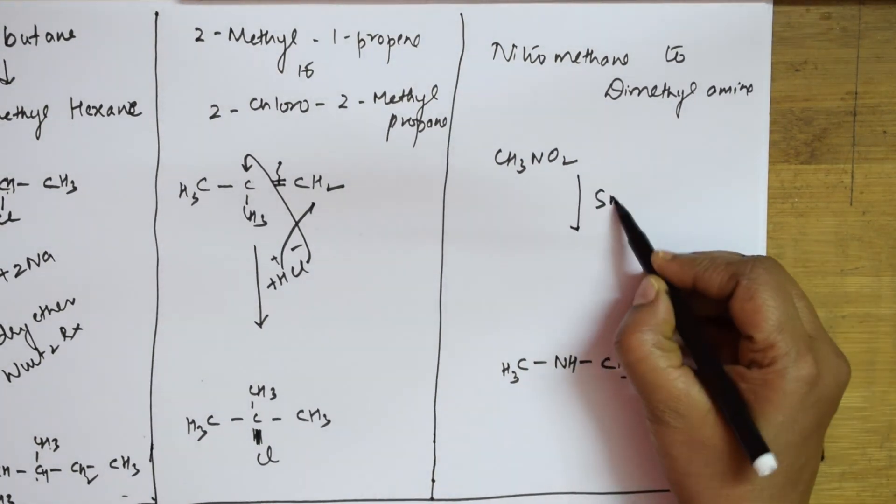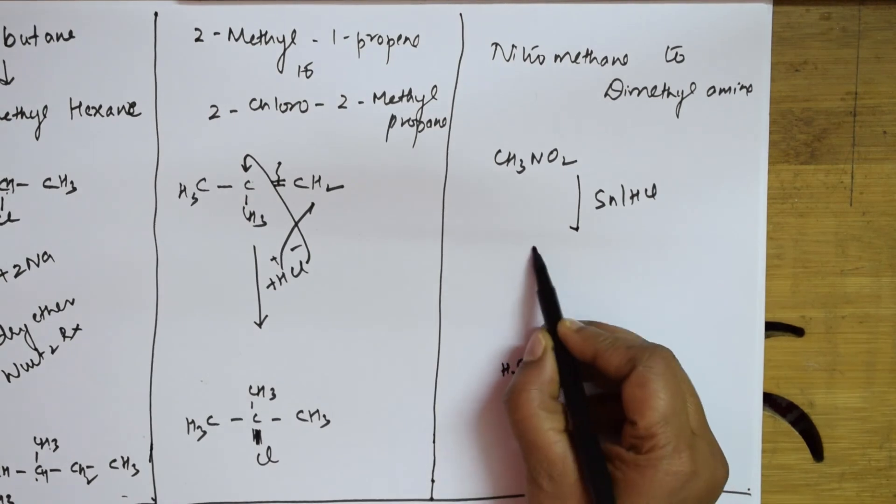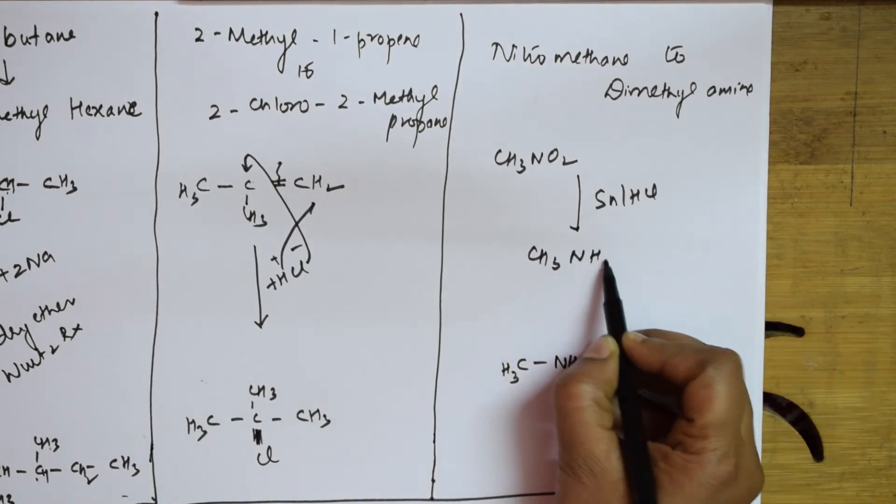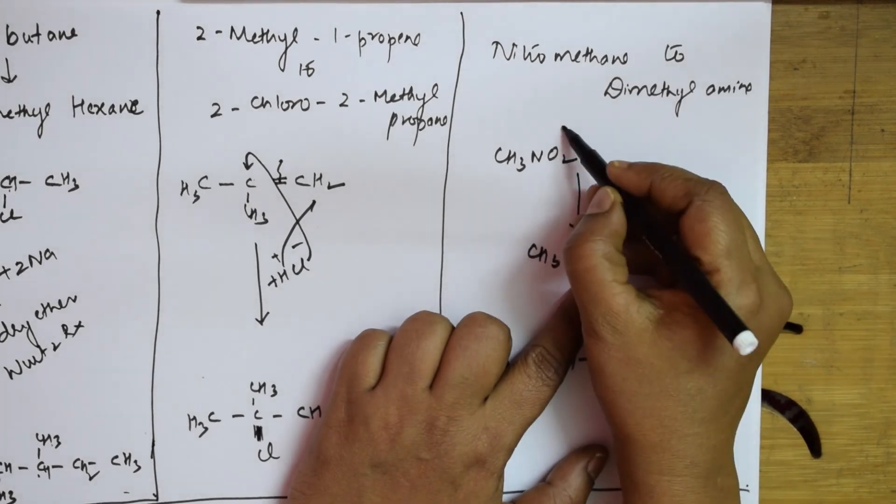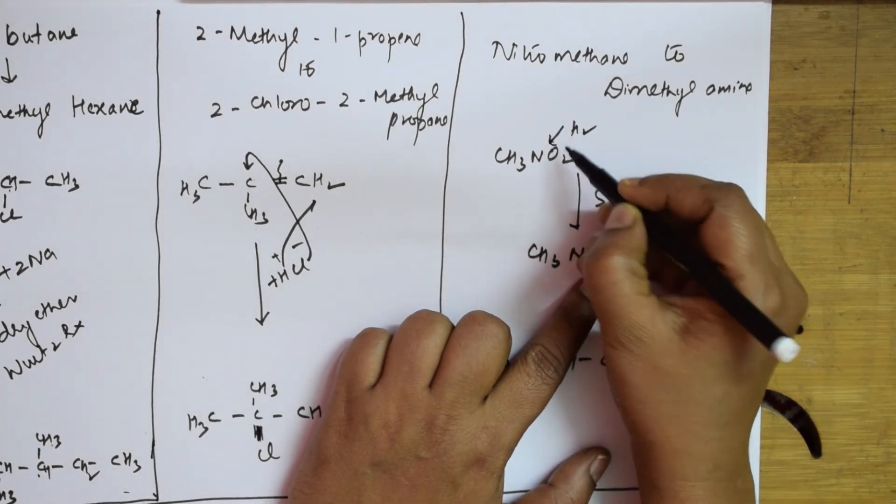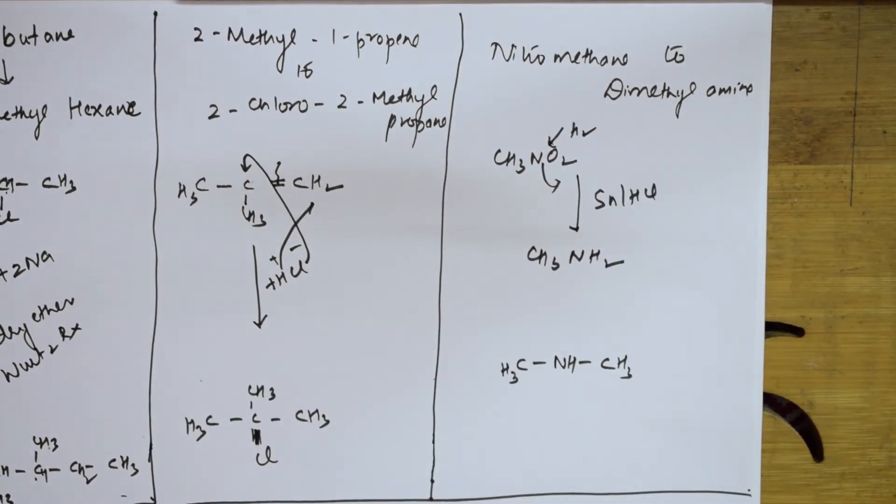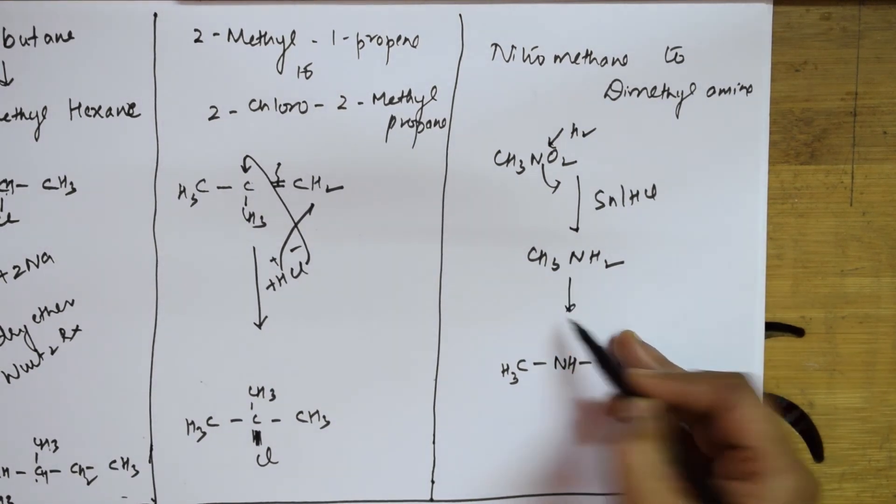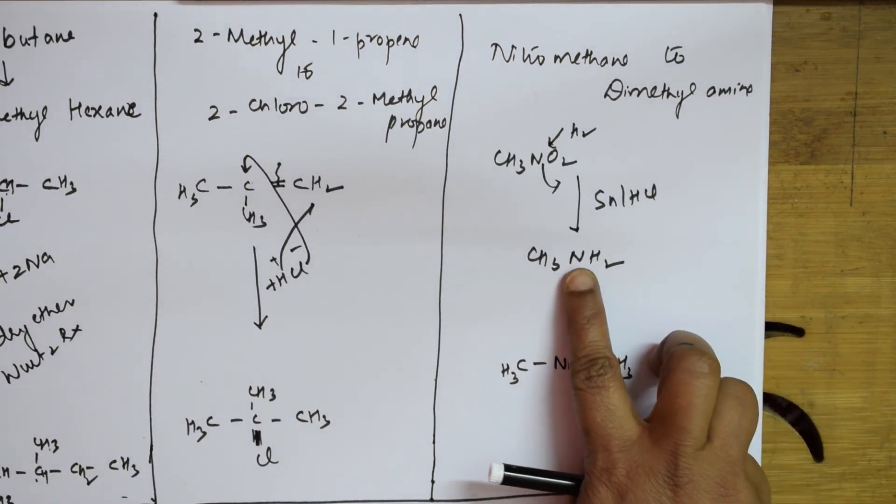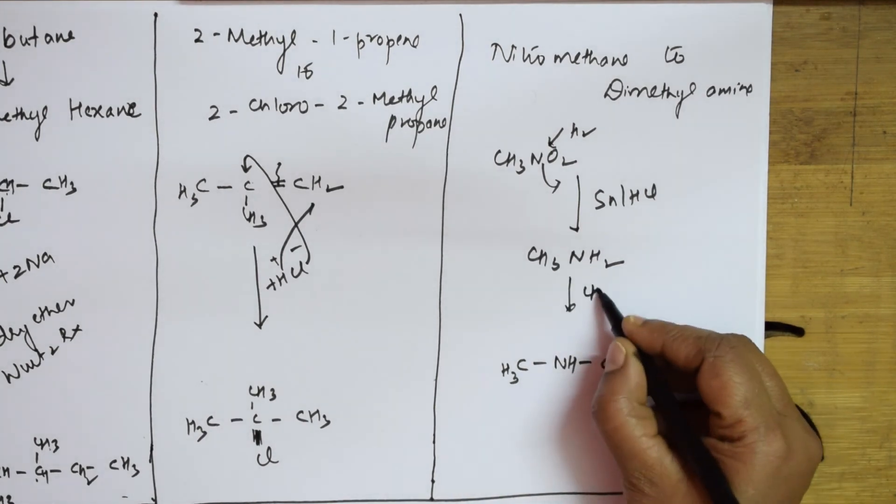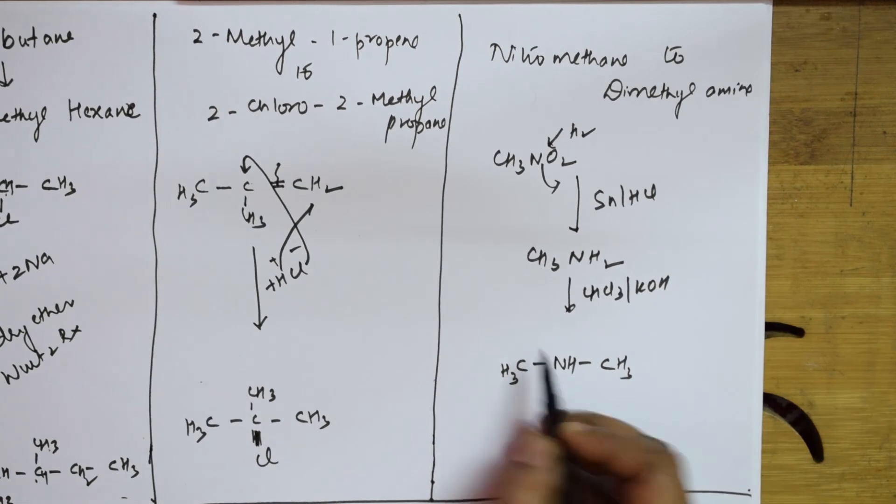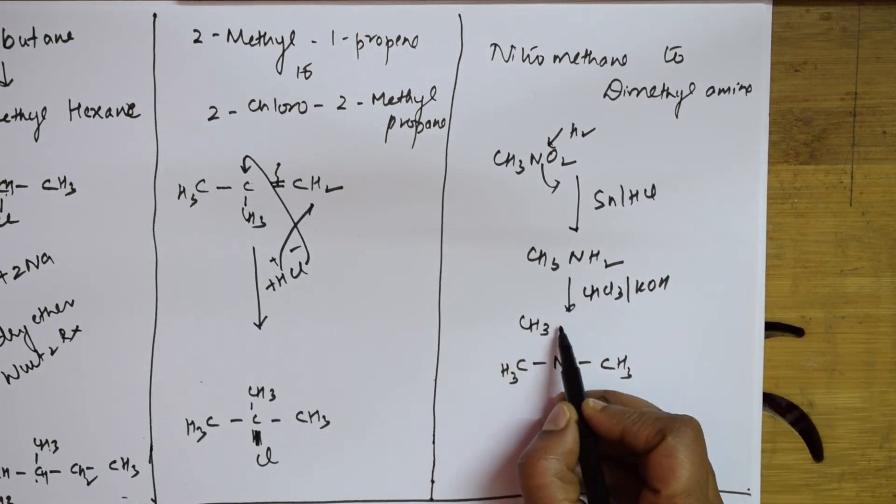First, convert the nitro group to amine. To convert nitro group to amine, I need to use a reducing agent: Sn with HCl. Then I'm going to get NH2 because oxygen is lost and hydrogen is added. NH2 - this hydrogen is added and oxygen is lost. Methylamine. Now what am I going to do?